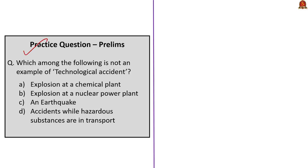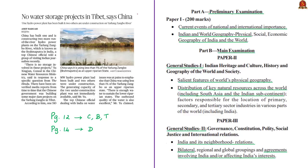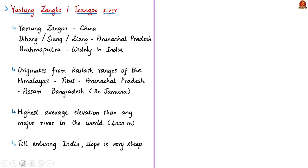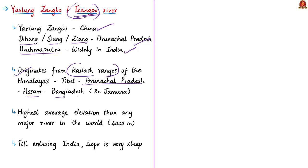The next article discusses the Yarlung Tsangpo River. It is also spelled 'Tsangpo' — known as Yarlung Tsangpo in China, Dihang or Siang in Arunachal Pradesh, and widely as the Brahmaputra in India. The river originates from the Kailash ranges of the Himalayas at an elevation of 5,300 meters, flows through Tibet, enters India through Arunachal Pradesh, flows through Assam, enters Bangladesh — where it is called the Jamuna — and finally drains into the Bay of Bengal.